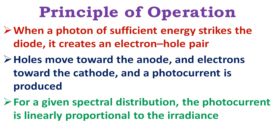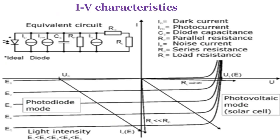The total current through the photodiode is the sum of the dark current, which is current that is generated in the absence of light, and the photocurrent. The dark current must be minimized to maximize the sensitivity of the device. To first order, for a given spectral distribution, the photocurrent is linearly proportional to the irradiance.